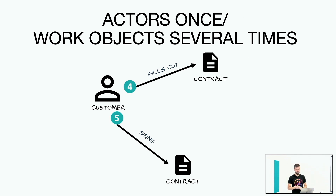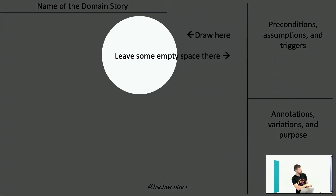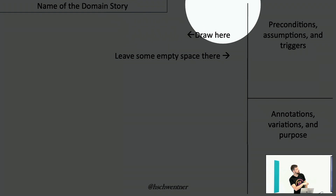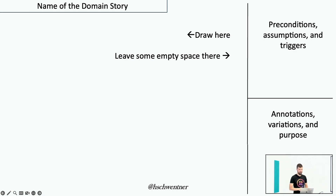These building blocks are drawn onto a modeling canvas — it doesn't have to be a real canvas; it can be a whiteboard or a piece of paper. We usually want a big white space for modeling, with the name on top and some space to add assumptions, preconditions, and general annotations. With that, I would like to do a little demo, and Susanne was so kind to be my interview partner. Please come up to the stage.